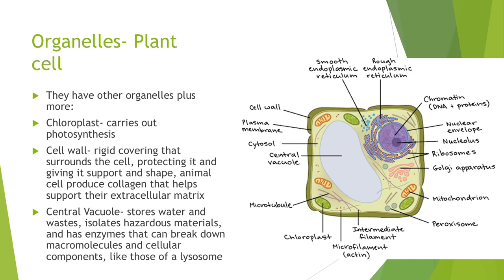Now we're going to talk about organelles in the plant cell. Plant cells have the same organelles as animal cells but with a few differences. The chloroplast carries out photosynthesis, which doesn't happen in animal cells. The cell wall is a rigid covering surrounding the cell, protecting it and giving it support and shape — animal cells just have a plasma membrane, while plant cells have a cell wall on the outside of that. Plant cells also have a central vacuole that stores water and waste, isolates hazardous material, and contains enzymes that break down macromolecules and cellular components.